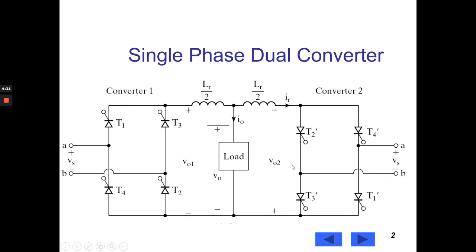The first full converter is capable of operating in two quadrants depending on the value of firing angle alpha. For the value of alpha less than 90 degrees, this converter works as a rectifier, thereby producing a positive average load voltage and load current and operates in the first quadrant.